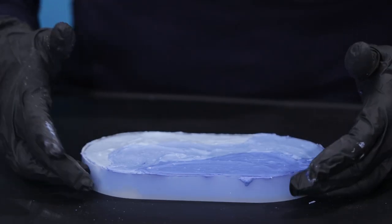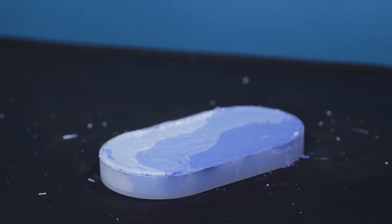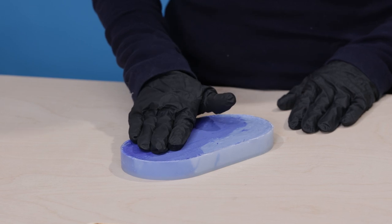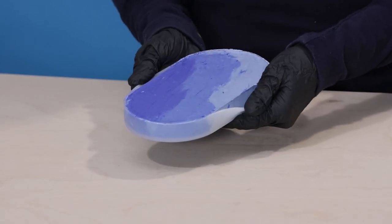It may be ready to demold in as little as one hour or a few hours depending on which pigments you added and the size of your mold. To be sure it's ready, touch the surface of your casting. If it's firm to the touch and cool, you can demold.